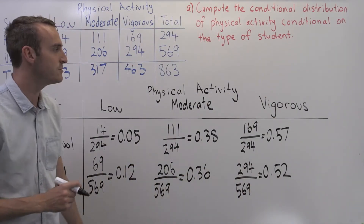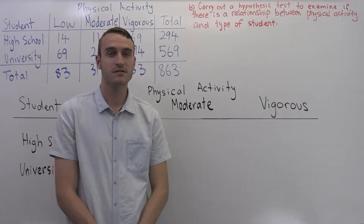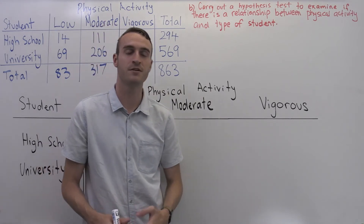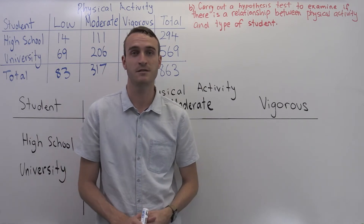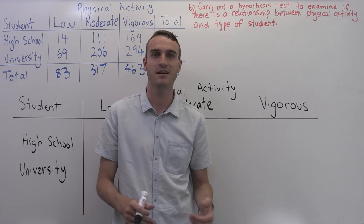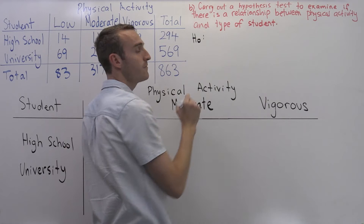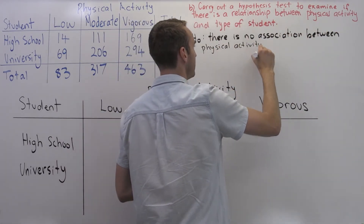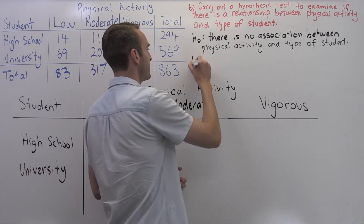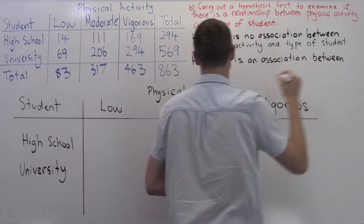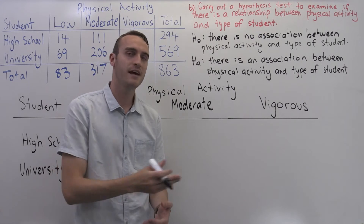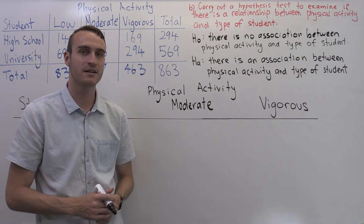We now have our two conditional distributions of physical activity based on the type of student. Part B asks us to carry out a hypothesis test to examine if there's a relationship between physical activity and type of student. Our null hypothesis H0 is that there is no association between physical activity and type of student. Our alternative hypothesis Ha is that there is an association between physical activity and type of student.